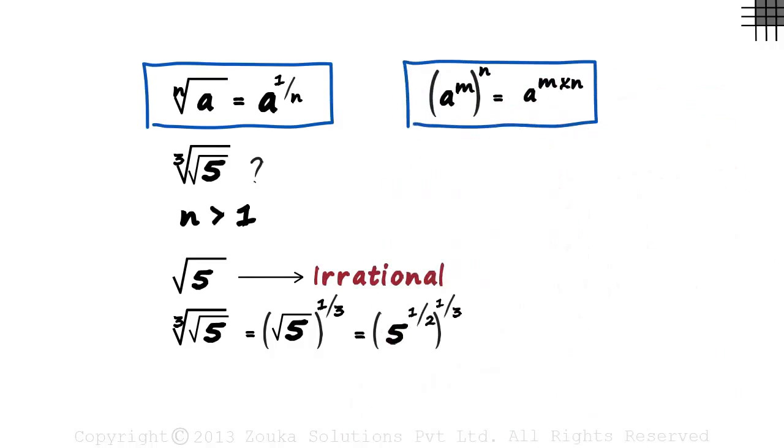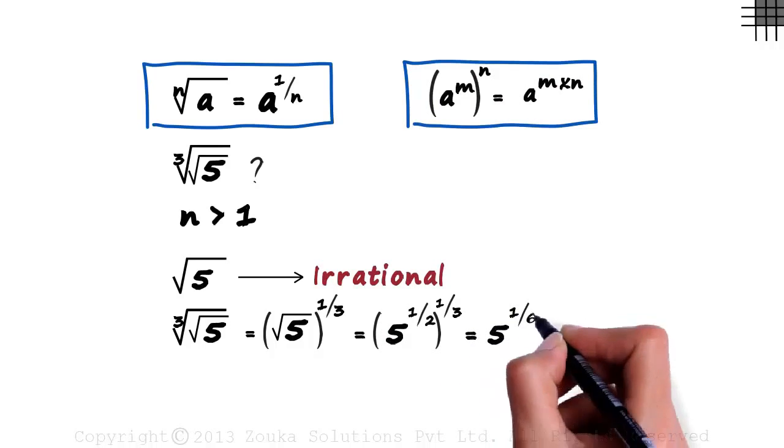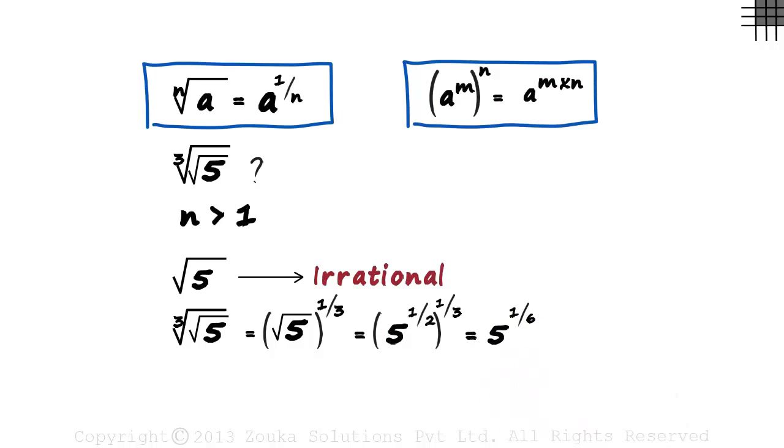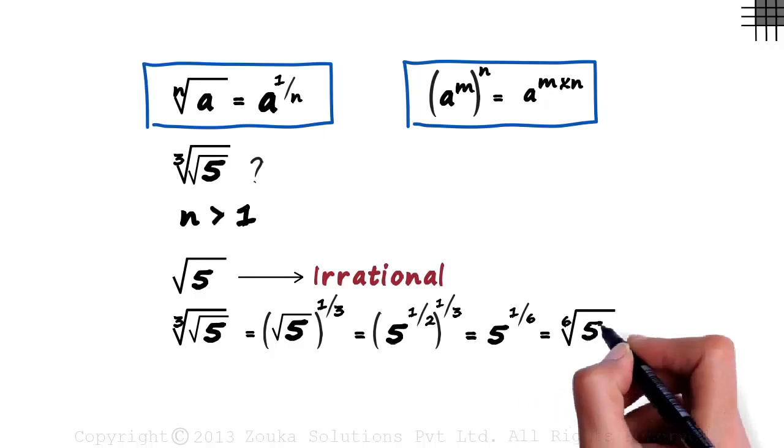The power law says that a raised to m the whole raised to n equals a raised to m multiplied by n. If we apply it here, this will equal 5 raised to 1 by 6. If you look at it closely, it is in the a raised to 1 by n form. Using this formula, we can write it as sixth root of 5.